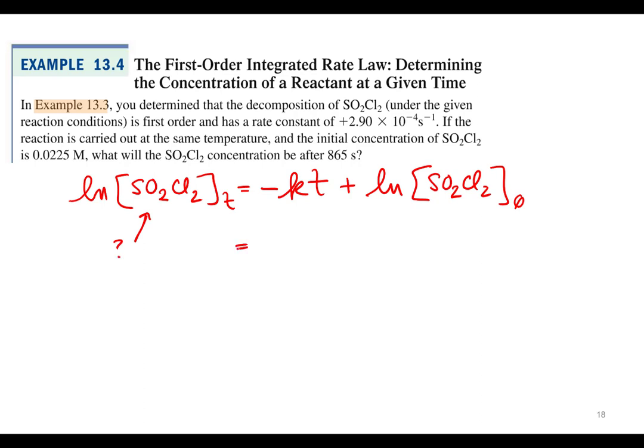Okay, so let's just plug in our values. We got negative k, which is 2.90 times 10 to the negative 4th reciprocal seconds, times t. What's our t? 865 seconds. So times 865 seconds plus the natural log of our initial concentration, so initial concentration 0.0225.